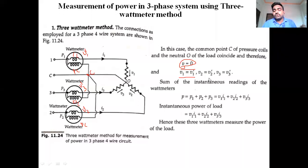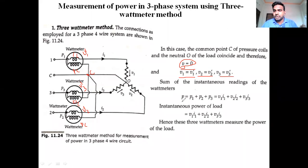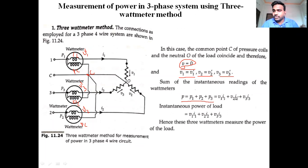Since V = 0, V1 = V1', V2 = V2', and V3 = V3'. The sum of all instantaneous readings: total power P = P1 + P2 + P3 = V1·I1 + V2·I2 + V3·I3. This is the behavior of instantaneous load in a three-phase system employing a three-wattmeter method.